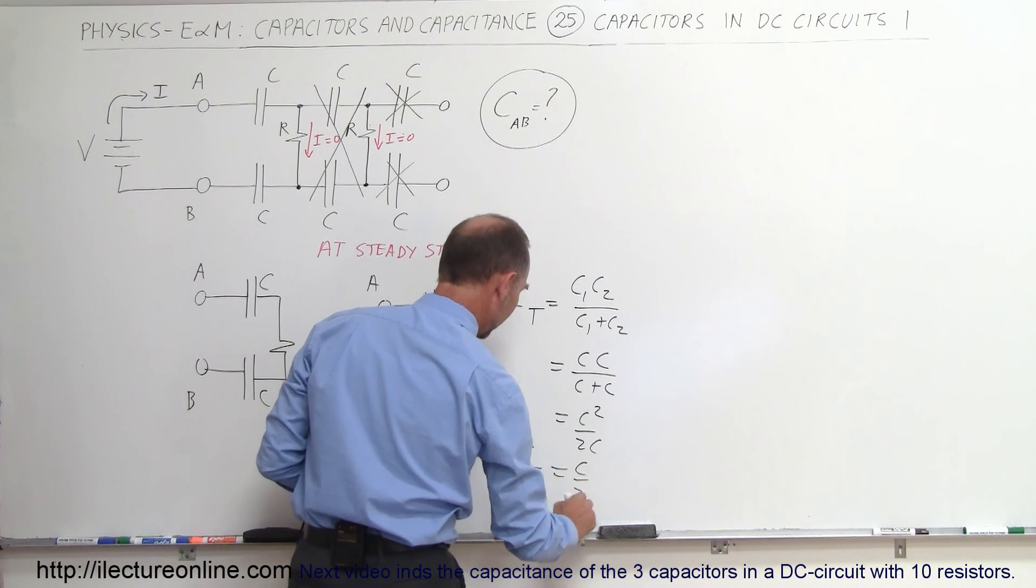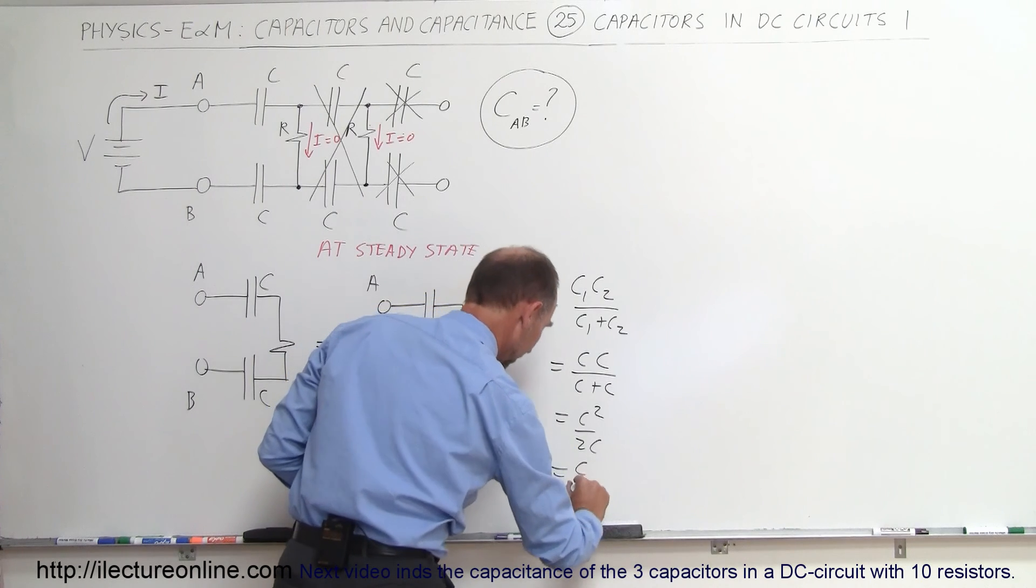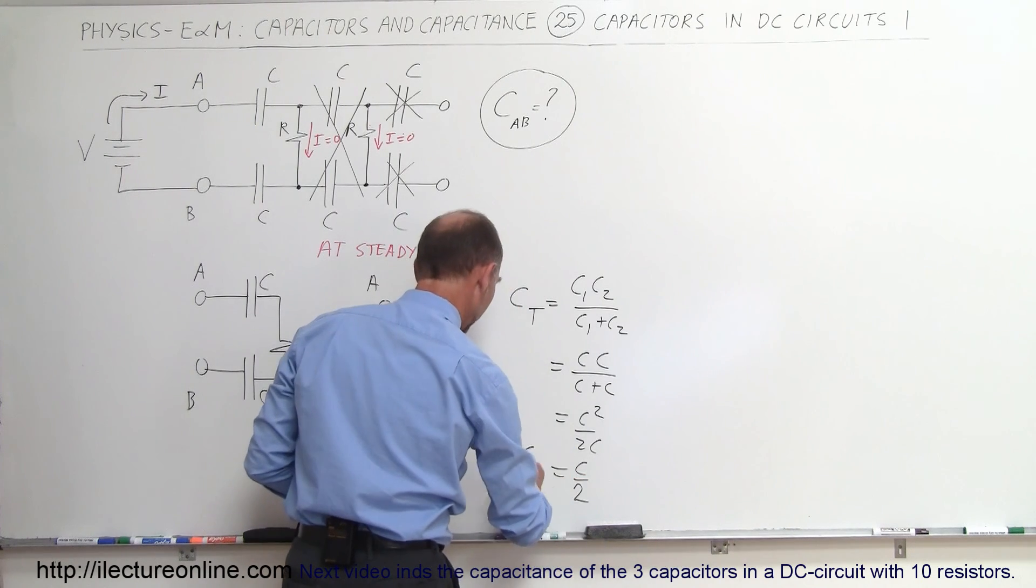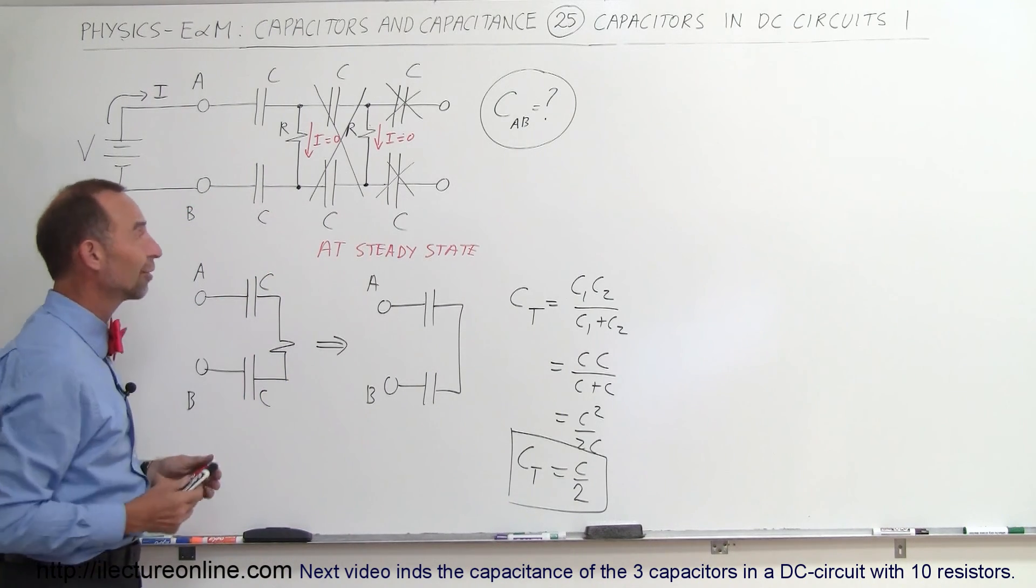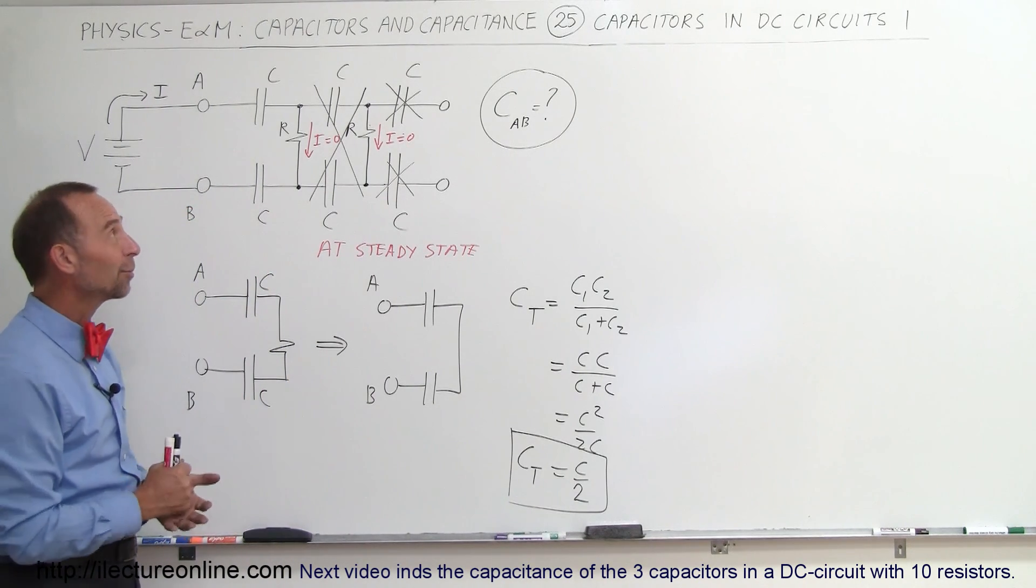And so the total capacitance, that's not a very good looking 2, let's go like this, that's better, so the total capacitance is simply C divided by 2 by the very nature of a circuit like that. And that's how we do that.